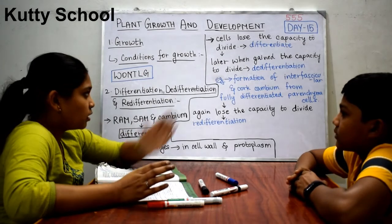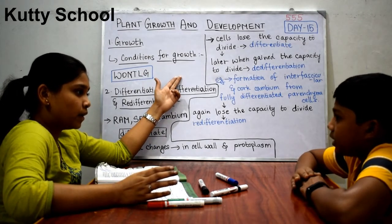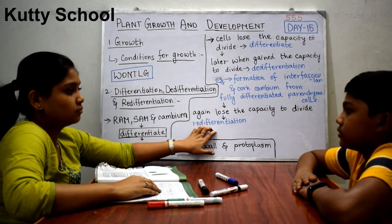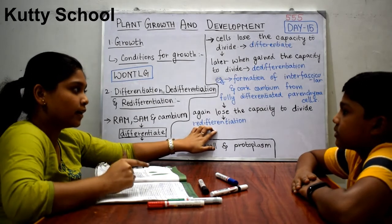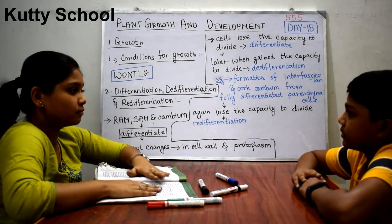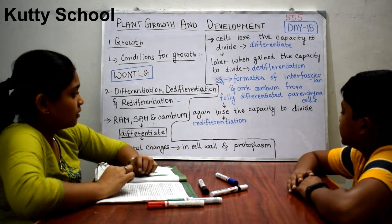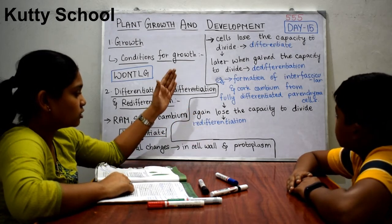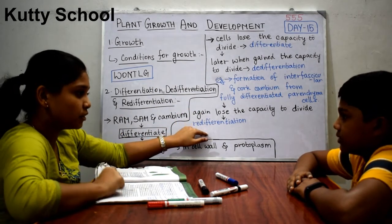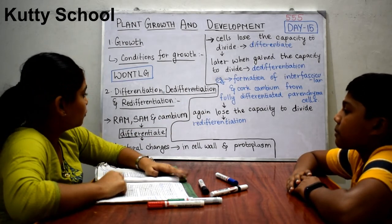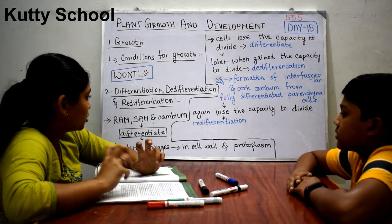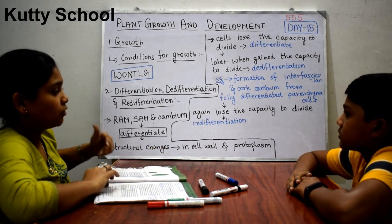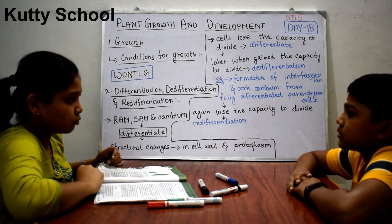After de-differentiation, the cells gain the capacity to divide again. If they subsequently lose the capacity to divide once more, that is known as re-differentiation. Some tissues undergo re-differentiation but some do not. Next we move to the topic of development.